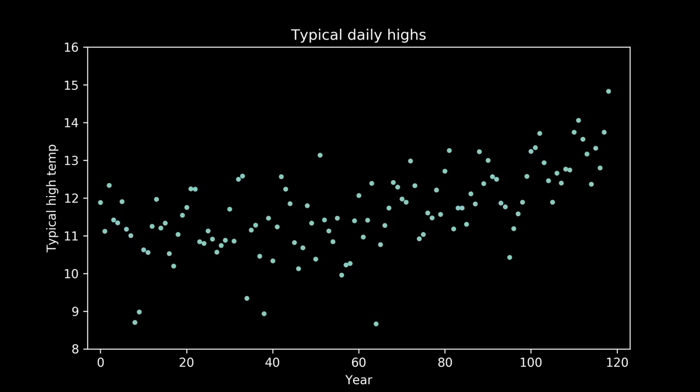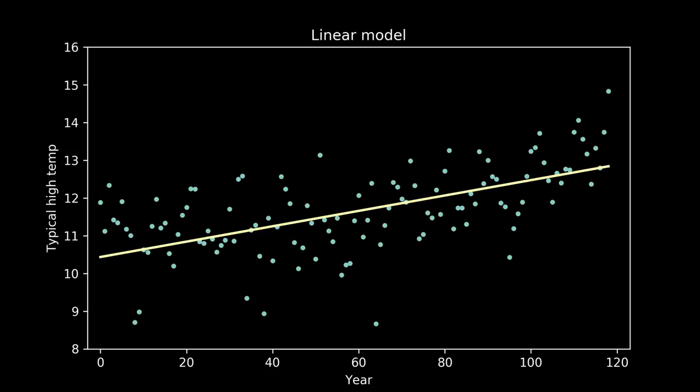There are a lot of models that can represent this, but a really nice starting point, because it's so simple, is a straight line. Here's what the best fit straight line looks like. It does a pretty good job. We can see that it definitely captures the upward tilt of the data, but it doesn't capture the bend in it.